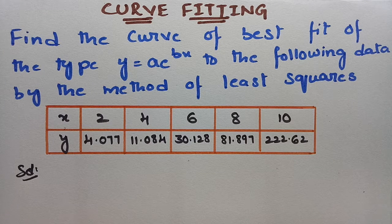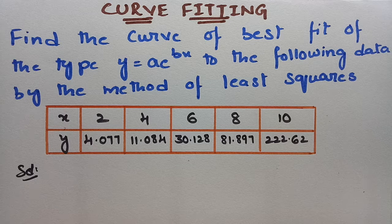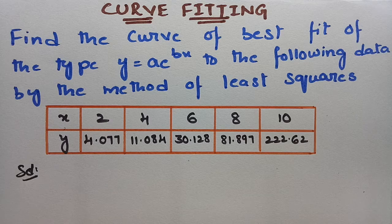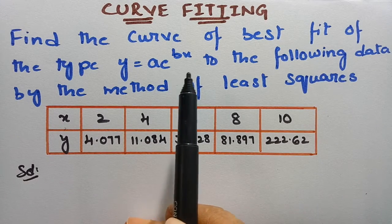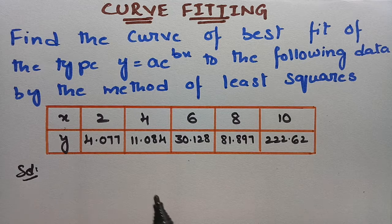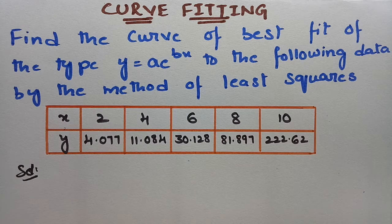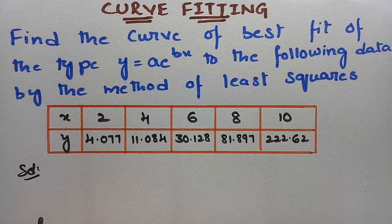You might be lagging somewhere in solving this problem, which you can't deny. Follow this video — it will immensely help you in getting a simple solution. Here is the problem on the screen: we have to find the curve of best fit of the type y = a·e^(bx) for the following data by the method of least squares. Here is the data given and we have to find a curve.